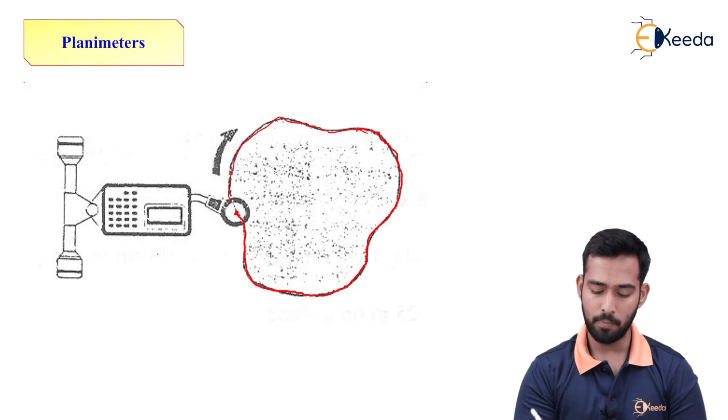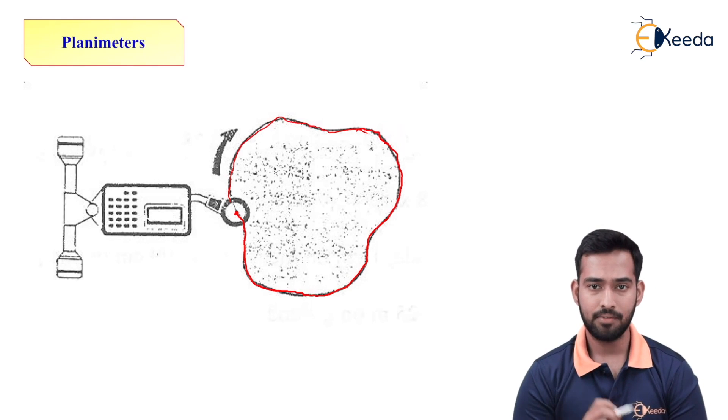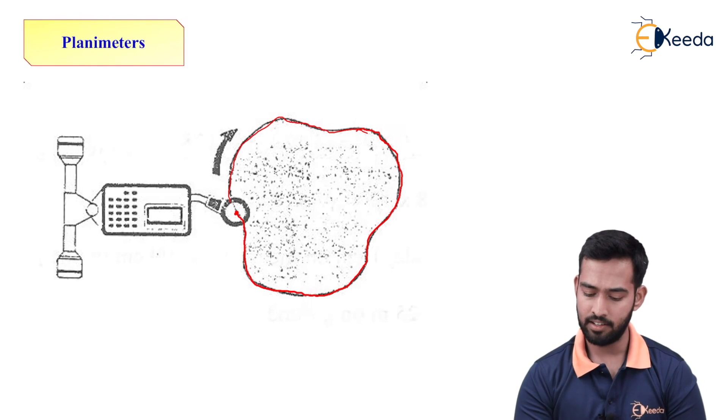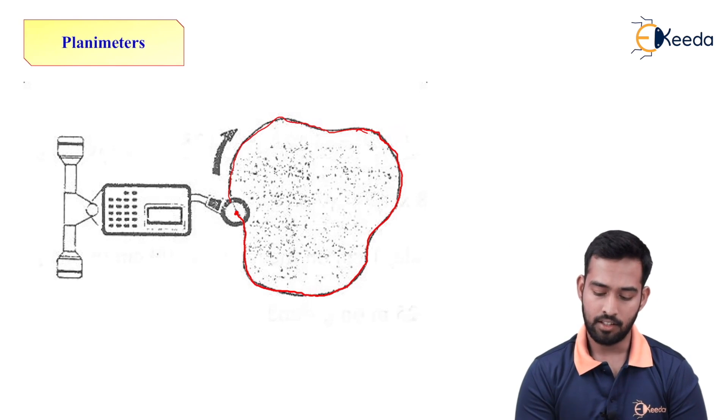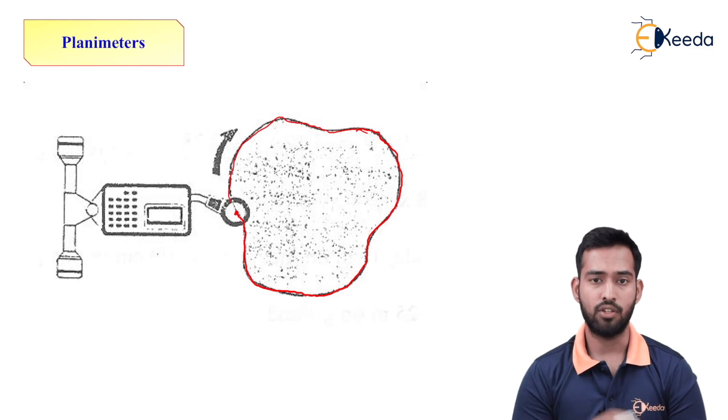So while starting, we have to press start button on your keyboard panel. We have to select the scale onto which the map is drawn and the unit. And then, we have to press start button. After start button, we have to trace the boundaries and we have to come back to a starting point again. The number displayed on display board will give you the accurate reading of the area.